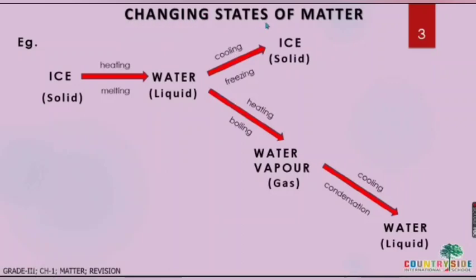Gases also do not have a fixed shape. Examples are oxygen, carbon dioxide, water vapor, steam, etc. Next, the next topic was changing states of matter. In changing states of matter, one state of matter changes from one state to another.